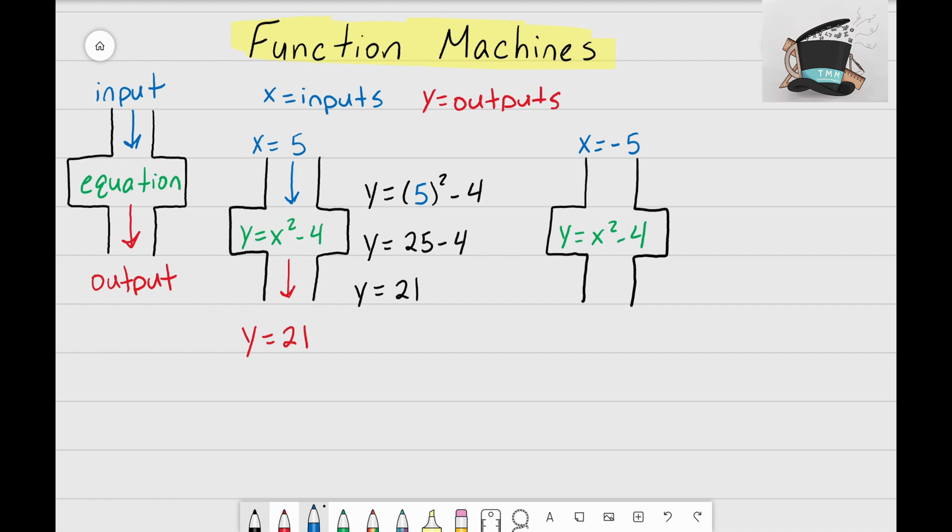what happens when I use a negative 5. So the negative 5 is my input, it's being dropped inside, and I still want to find out what my output will be. All right, let's follow that same process again off to the side.